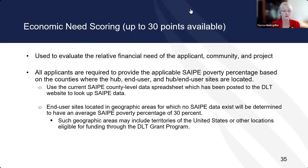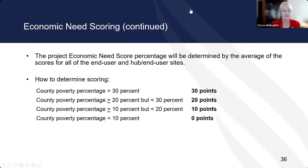The economic need scoring parallels percentages to points: 10 points for between 10% and 20%, and 20 points for between 20% and 30%. Please include all of that information on your worksheets.